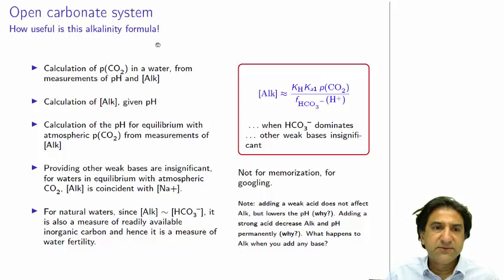How useful is this alkalinity formula? Well, it's pretty useful. If we measure alkalinity, then after we measure the pH as well, we can get the local pressure of CO2, which is sometimes pretty darn difficult to measure. It's pretty difficult to measure the pressure of a gas when you're three meters under water in sludge. But if you measure alkalinity and pH, you can get it from this equation.